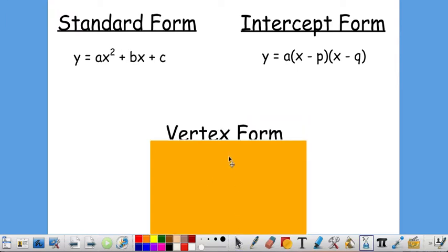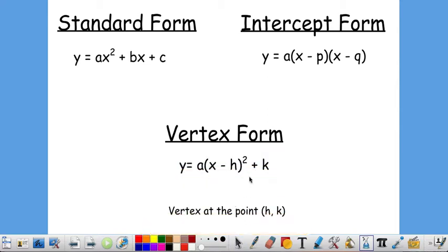The third form we're going to talk about today is actually called vertex form, and it's called vertex form because you're basically given the vertex for free just by looking at the equation. Now here's our general vertex form, and it looks a little complicated, but it's really not so bad once you get the hang of it.